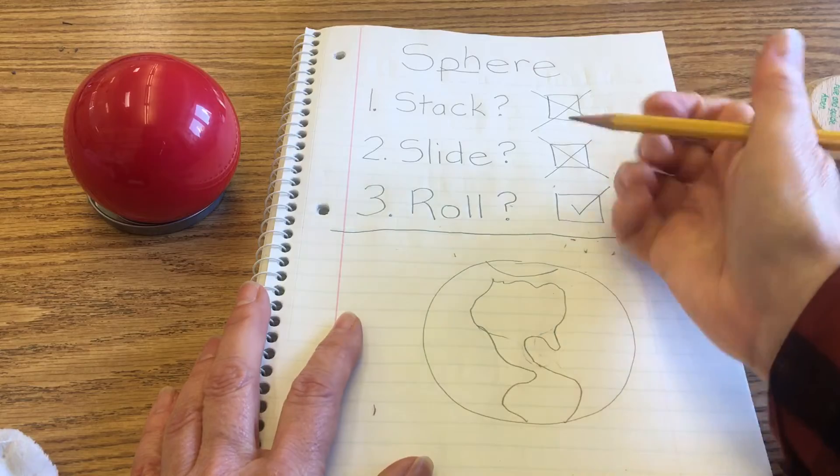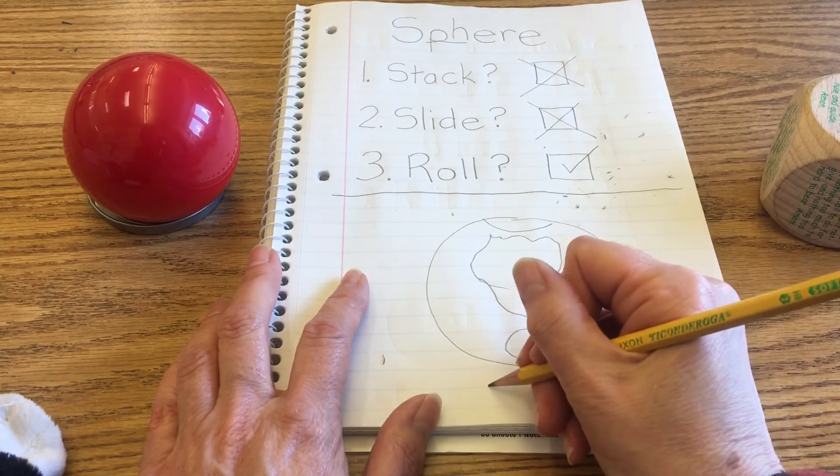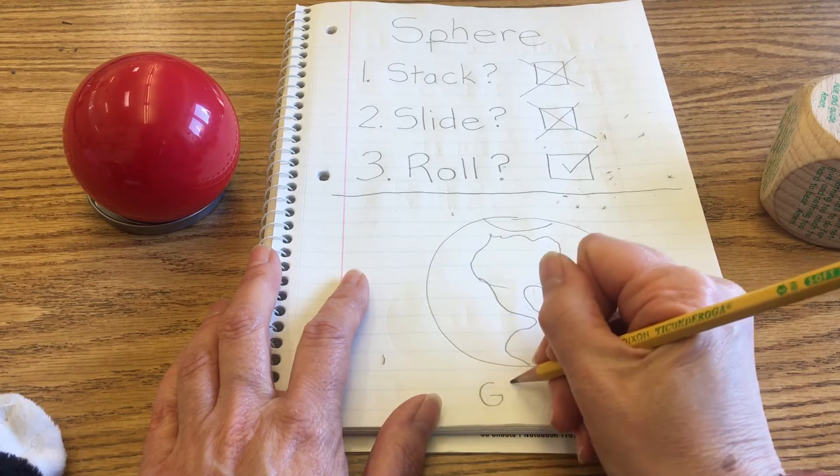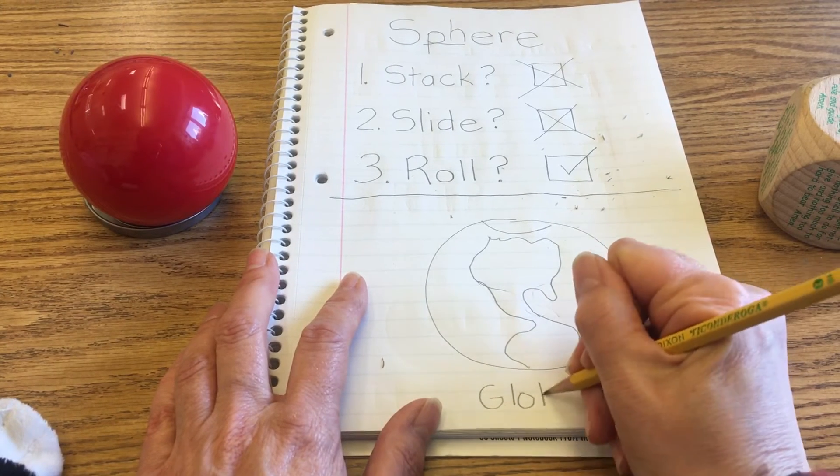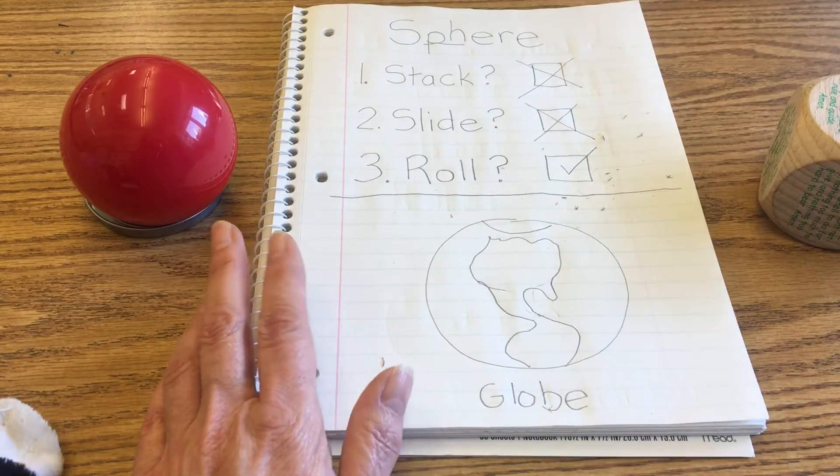And then this goes off like this into South America. Kind of goes like this. And so I'm going to color that because that would be the Earth or a globe. So I'm going to put the word globe here. And then I'm going to go ahead and give that some color and give myself an exit ticket.